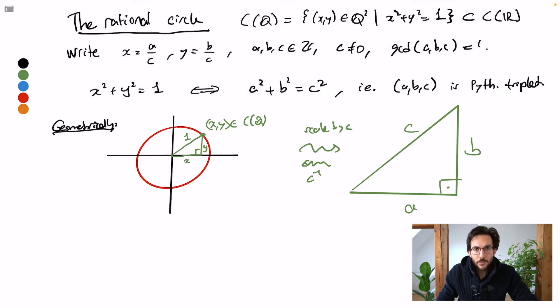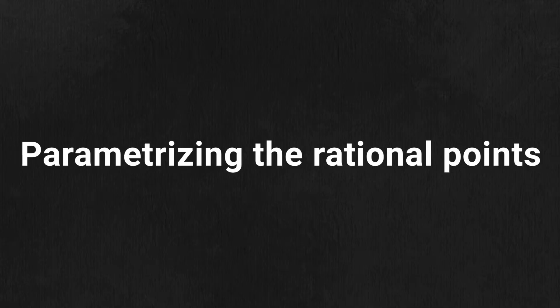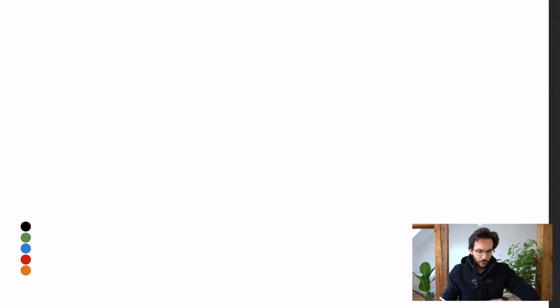What I want to do next is, in order to describe the rational points on the circle, to give a parametrization of all rational points on the circle. And this will, in turn, give me a parametrization of all Pythagorean triplets.